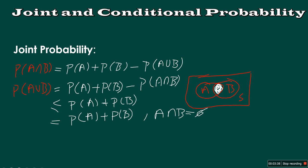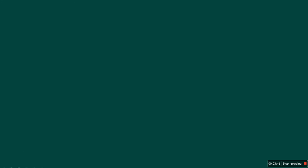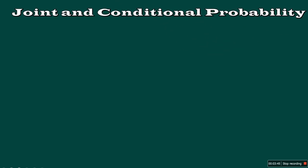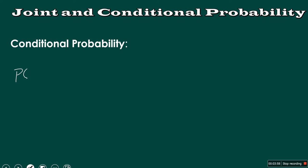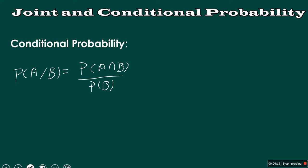Now let's go further to the next part of our lecture, where we will speak about conditional probability. Conditional probability is defined as: probability of A given B equals probability of A intersect B divided by probability of B, where probability of B cannot be equal to zero.